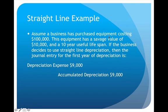To see straight-line in an example: a business purchased equipment costing $100,000, with an estimated $10,000 salvage value and a 10-year useful life. The calculation is: $100,000 minus $10,000, divided by 10 years, giving $9,000 per year. In the first year, we take $9,000 of depreciation. The journal entry is a debit to Depreciation Expense and a credit to Accumulated Depreciation, which shows a running total of all depreciation accumulated on that asset.